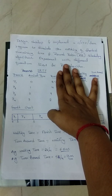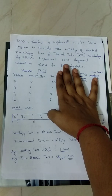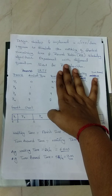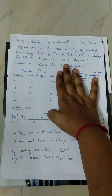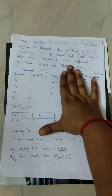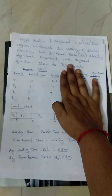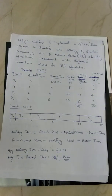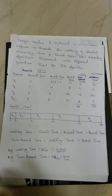Now the question is: what is preemptive? Preemptive is nothing but the ability of the operating system to preempt a currently scheduled task or process. We'll see how this algorithm works. First we'll draw the Gantt chart. Consider only these three columns: process, arrival time, and burst time.